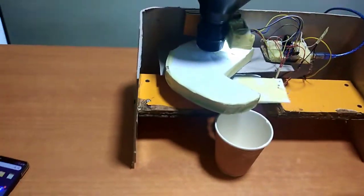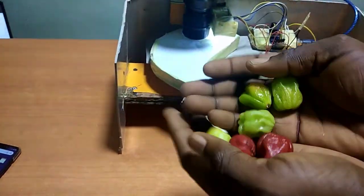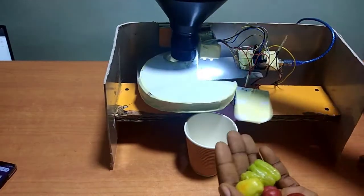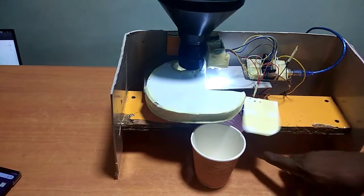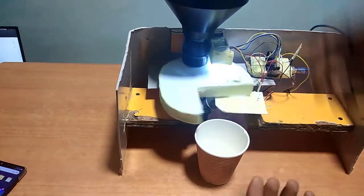Alright, so I have a mixture of both ripe and unripe pepper here. So let's see if this machine will be able to separate it. So let me start with this. That's an unripe pepper. It's inside the red cup inside. So let's try the ripe pepper.